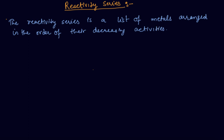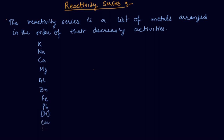Let's go through all the elements of the reactivity or activity series: potassium, sodium, calcium, magnesium, aluminium, zinc, iron, lead, hydrogen, copper, mercury, silver, and gold.